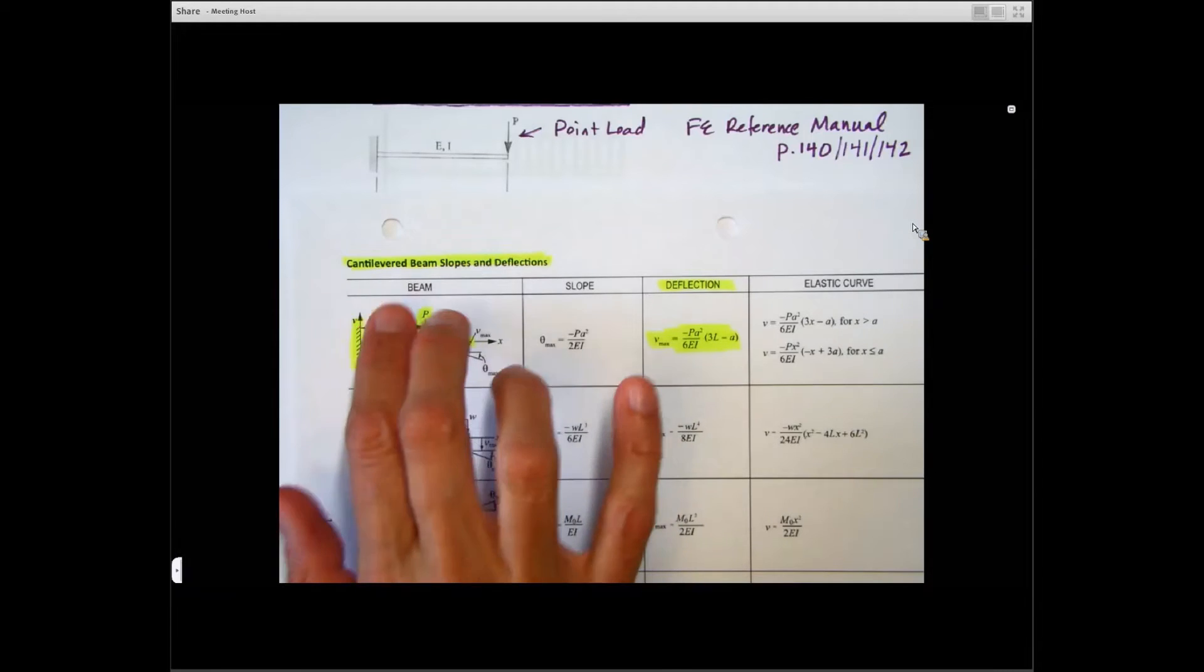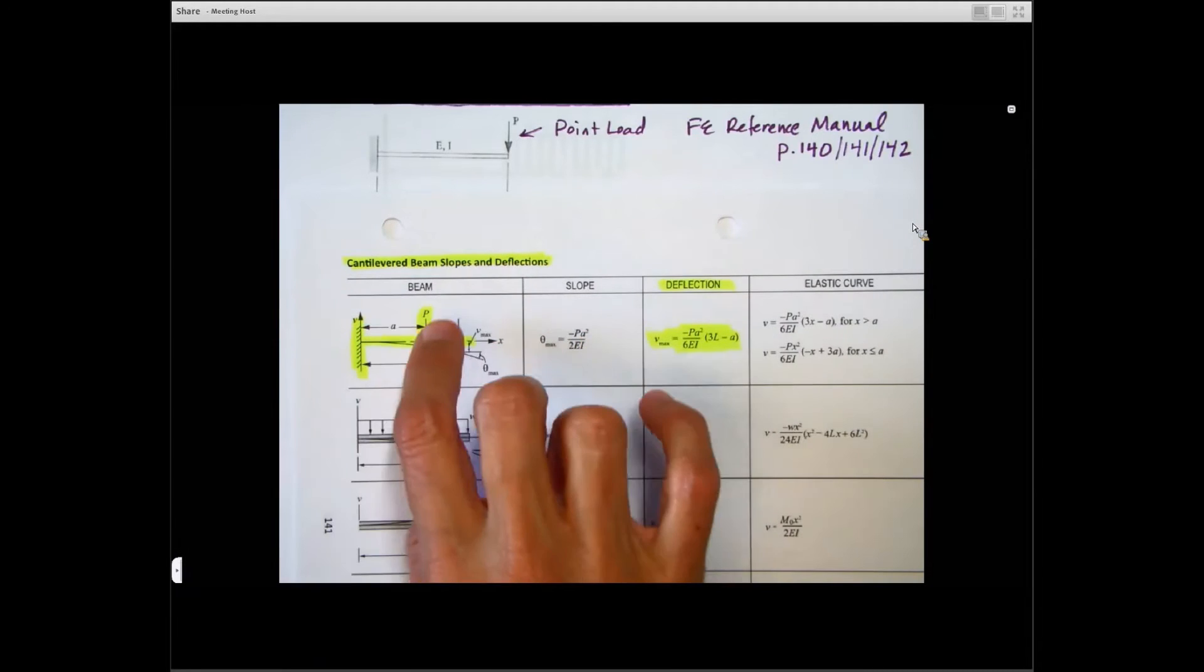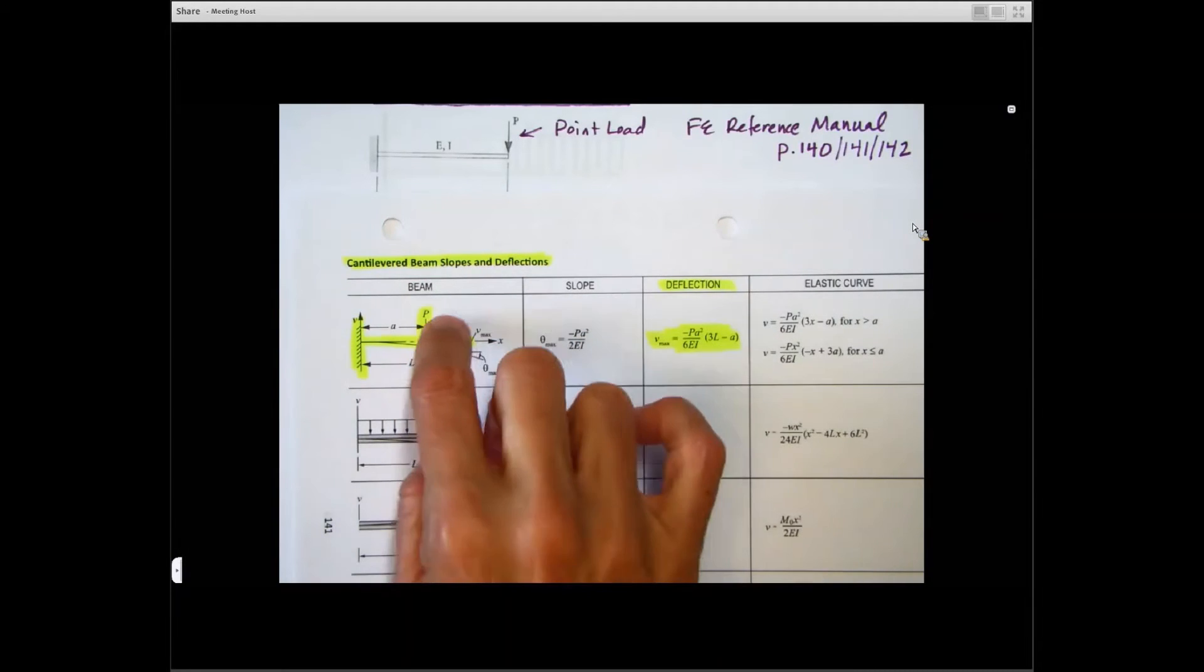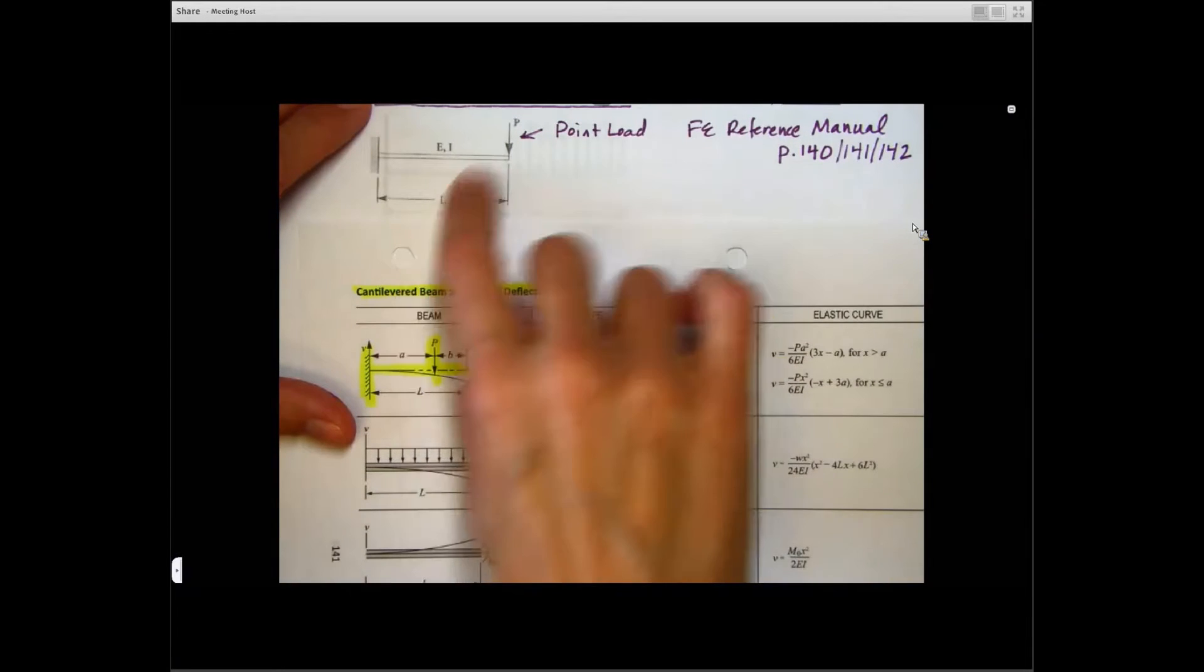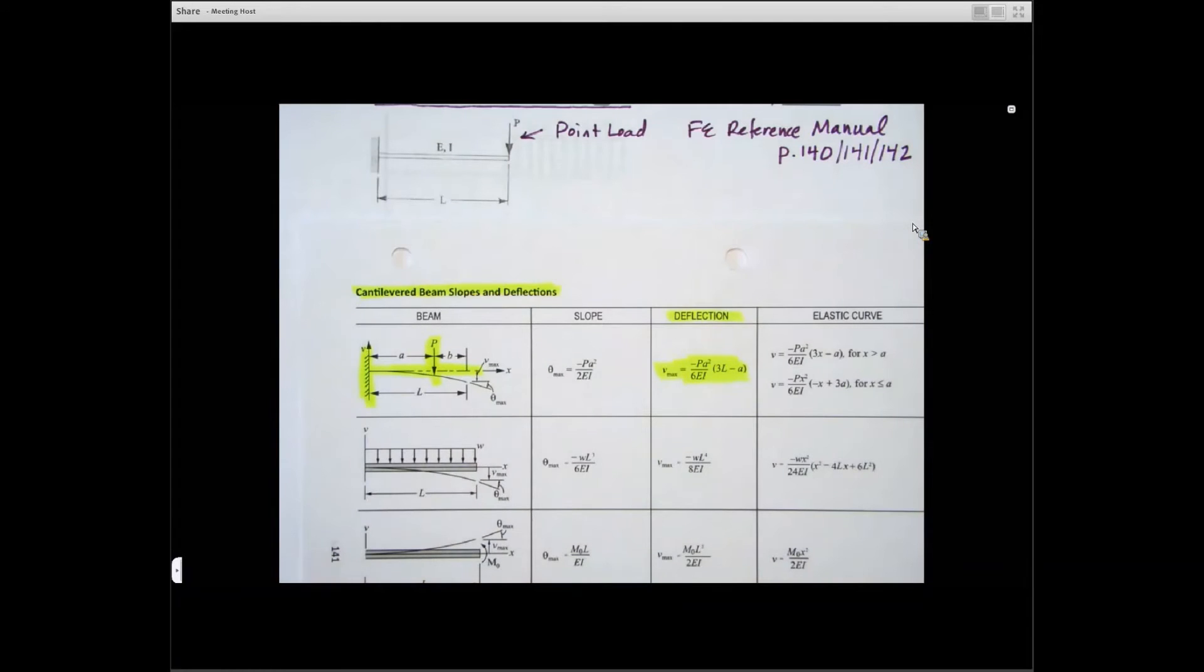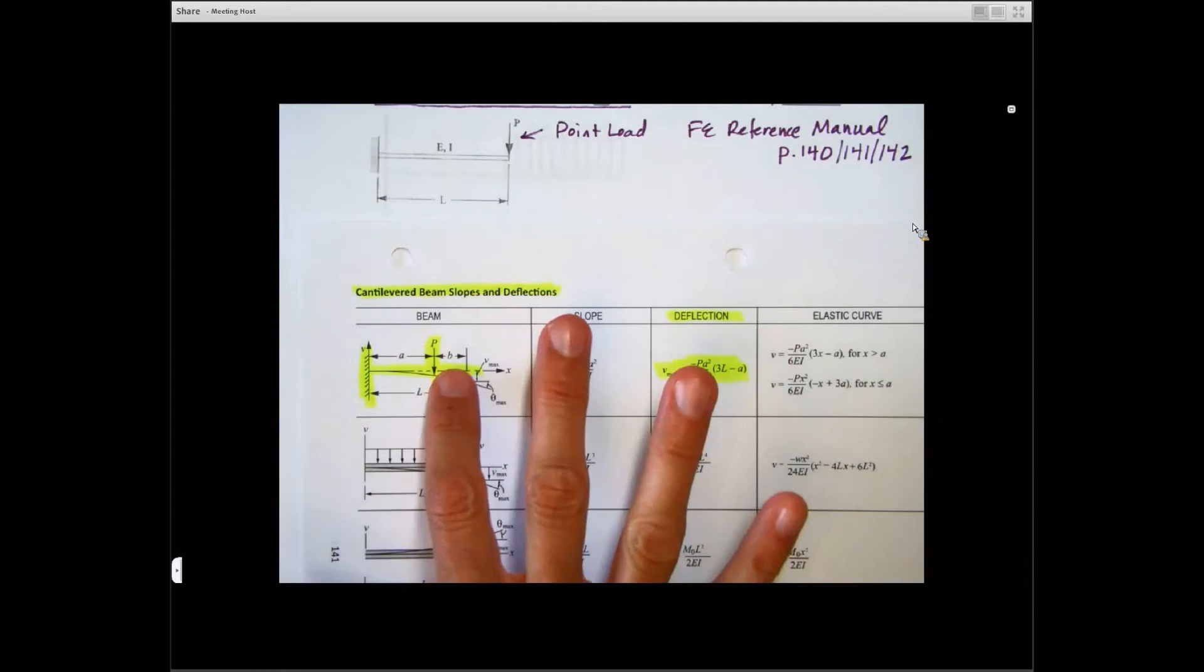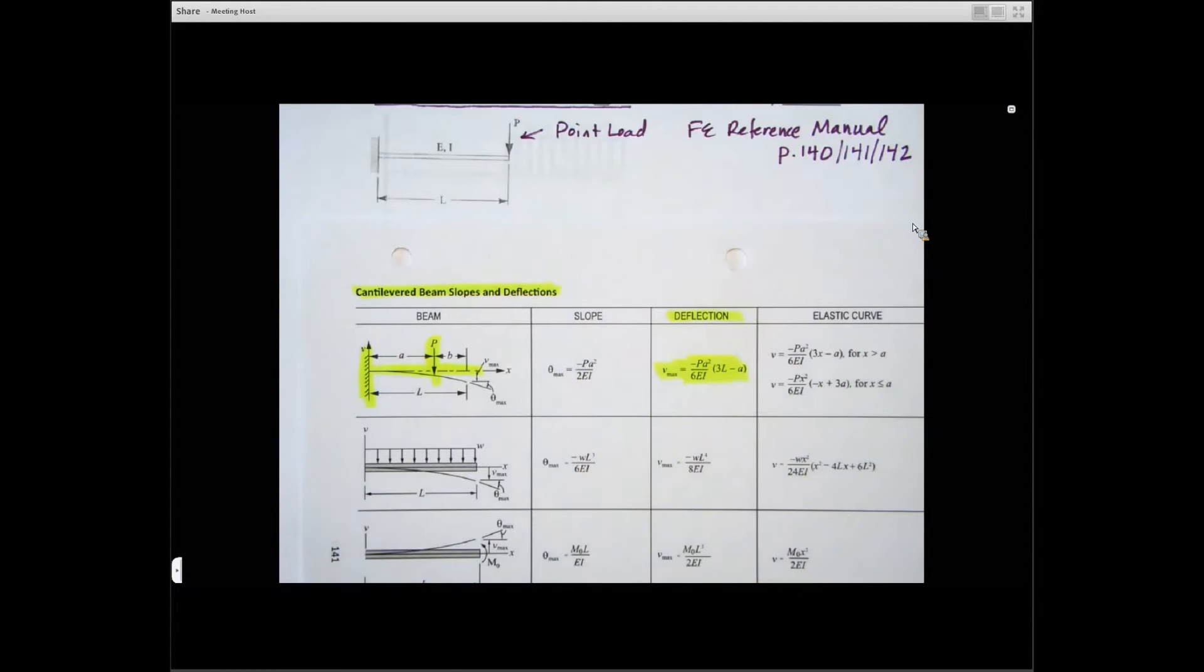That's okay, because we're given these dimensions A and B, so we could just say, well, B is just equal to zero, right? And in this case, A would be equal to L. A is equal to the length of the beam. So that's okay if the point load's not exactly where you need it to be with those A and B.